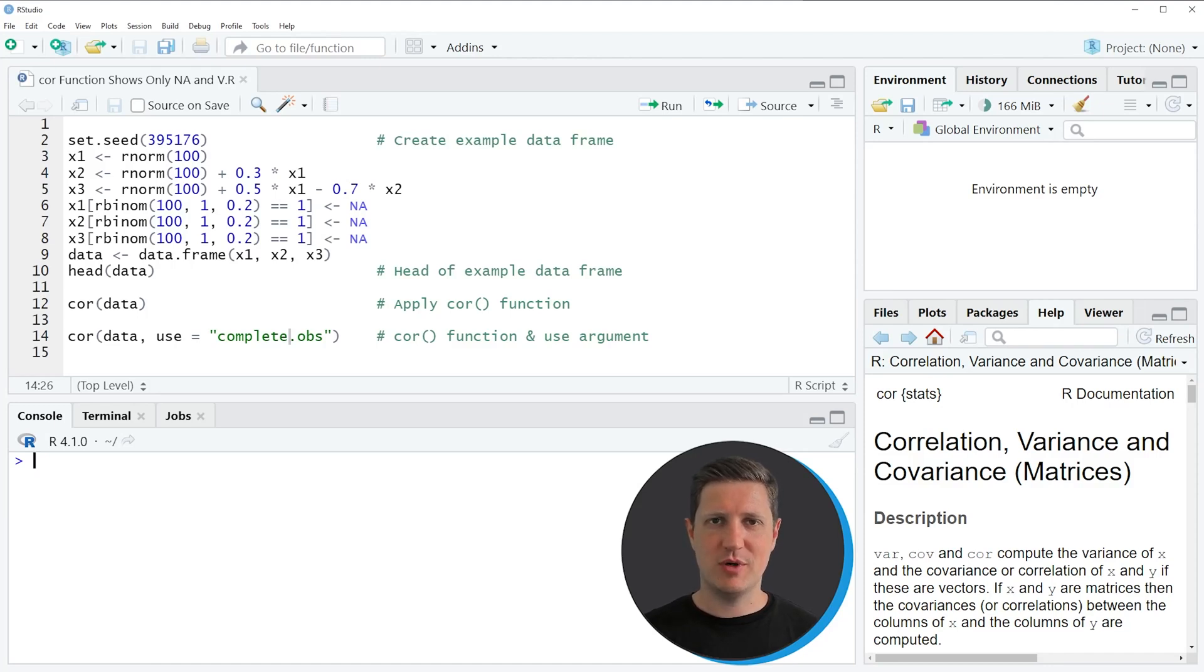Hi, I'm Joachim for StatisticsGlobe and in this video I'll explain what to do when the correlation function shows only ones and NA values in the correlation matrix.